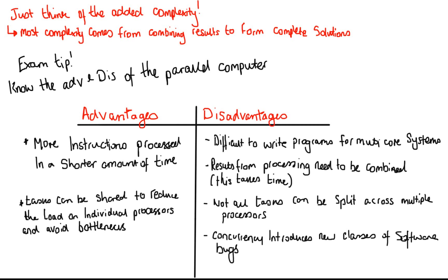Concurrency introduces a new class of software bugs. Concurrency in computer science is all about completing tasks out of order, and when you program a piece of software it's very difficult to test for your program being executed in different orders.